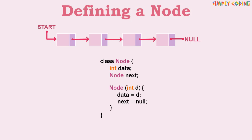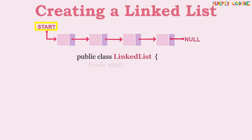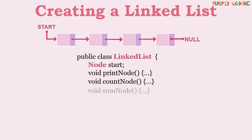Now that we have defined the class for node, let's define the class for the linked list. This class just needs to maintain the variable start which points to the beginning of the linked list. Remaining nodes can be accessed by using the node's next pointer. We declare a member variable responsible to hold reference to the start, and we can write different member functions to do linked list operations.